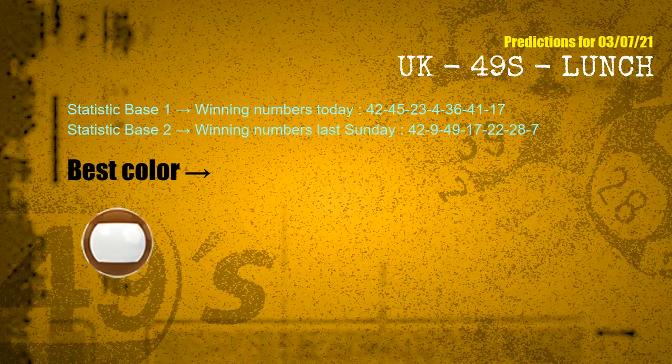According to the statistics above, with winning numbers today — 42, 45, 23, 04, 36, 41, 17 — and winning numbers last Sunday — 42, 09, 49, 17, 22, 28, 07 — the most frequently following color is brown.